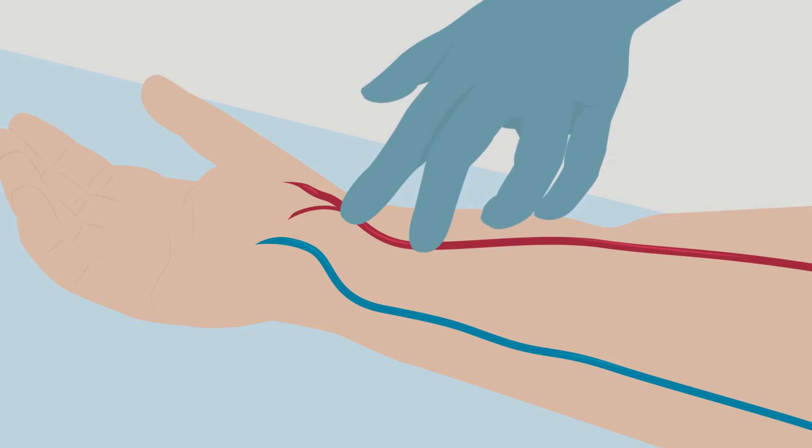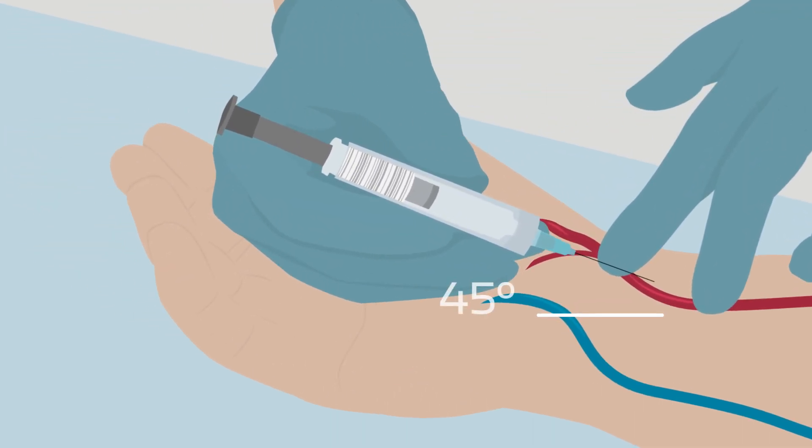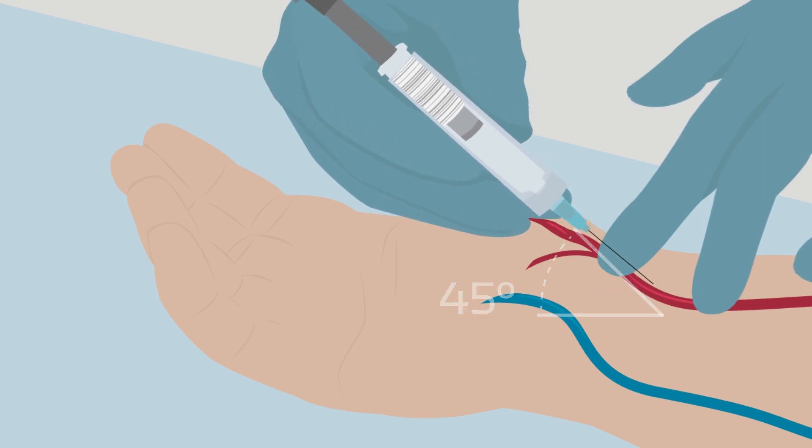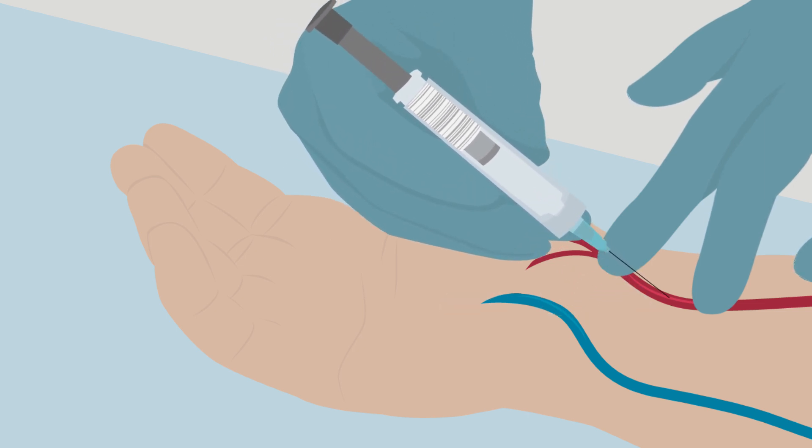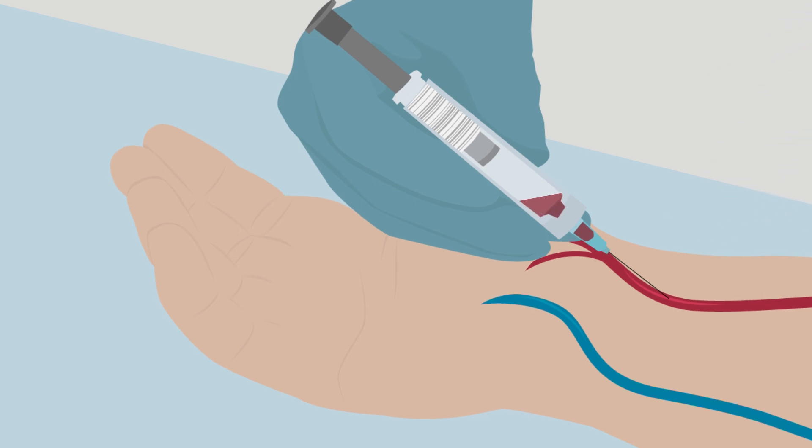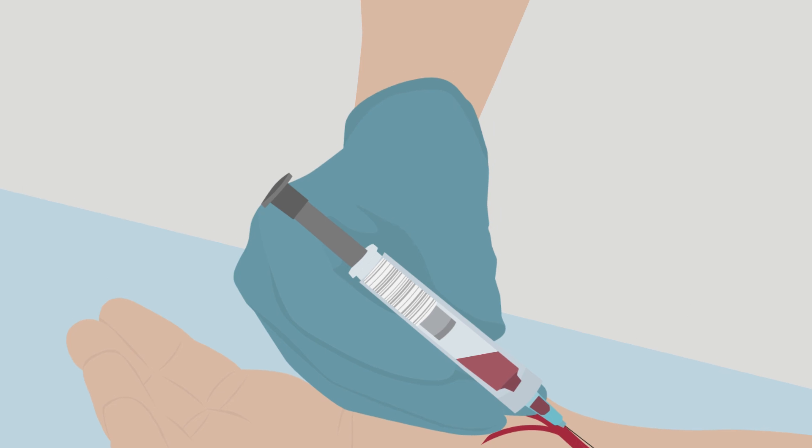You can use your index and middle fingers to identify the path of the artery. Hold the needle at a 45-degree angle or less and puncture the skin right in front of your index finger, making sure that the needle insertion follows the path of the artery. Stop the insertion when you see a flash of blood entering the syringe, and hold the position until you have collected the desired blood volume.